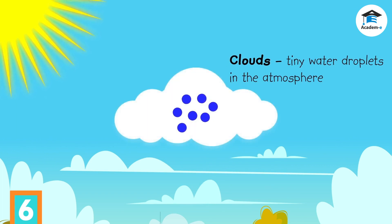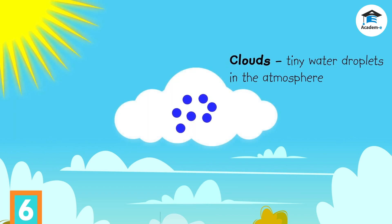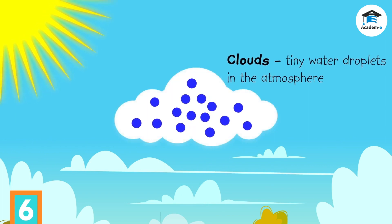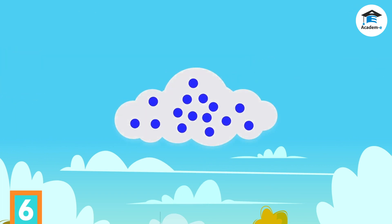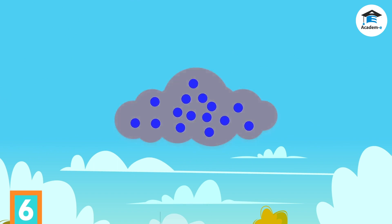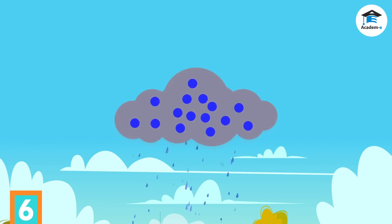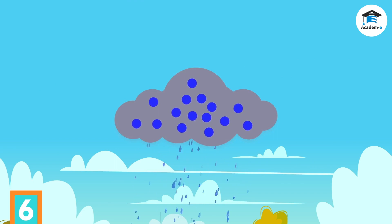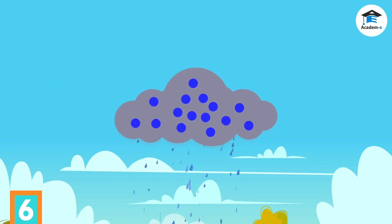These cloud droplets may join up and form bigger and heavier droplets. When the air can no longer hold the water vapor in it, the water vapor falls to the ground as rain, or in some parts of the world, as snow.